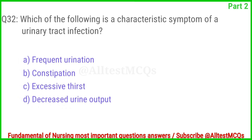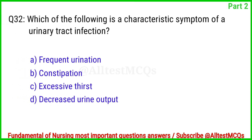Question No. 32. Which of the following is a characteristic symptom of a urinary tract infection? The right answer is Option A: Frequent urination.